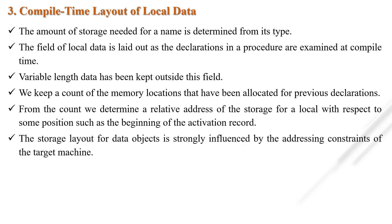The next topic is compile time layout. Runtime storage comes in a block of contiguous bytes, where the byte is the smallest unit of addressable memory. The amount of storage needed for a name is determined from its type. Storage for an aggregate such as an array or record must be large enough to hold all its components. The field of local data is laid out as declarations in a procedure are examined at compile time, and variable-length data is kept outside this field. We keep a count of memory locations allocated through previous declarations to determine relative addresses of storage for a local, with respect to the beginning of the activation record. The storage layout of data objects is strongly influenced by the addressing constraints of the target machine.